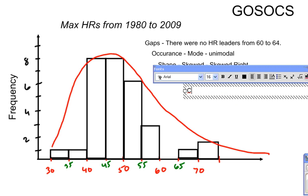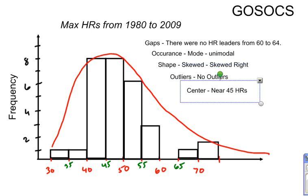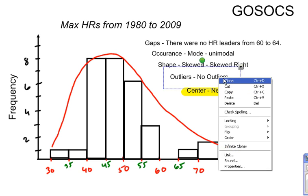Now we go to the center. We're actually going to focus on the center and the different ways to describe that in another chapter. We're in chapter four right now. So I would just say the center is near 45 home runs. That's all I need to say right now. But again, we will focus a lot more on how to describe the center in the future.